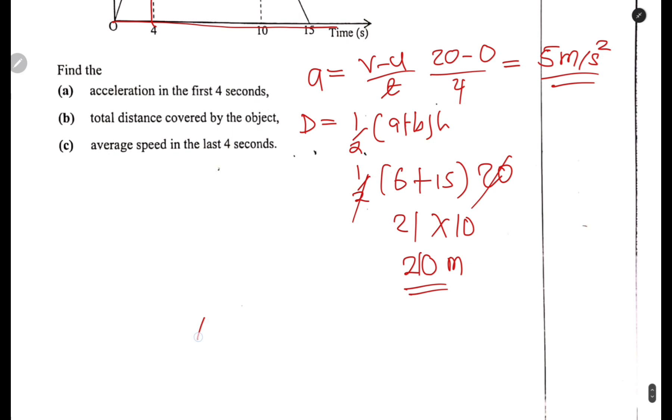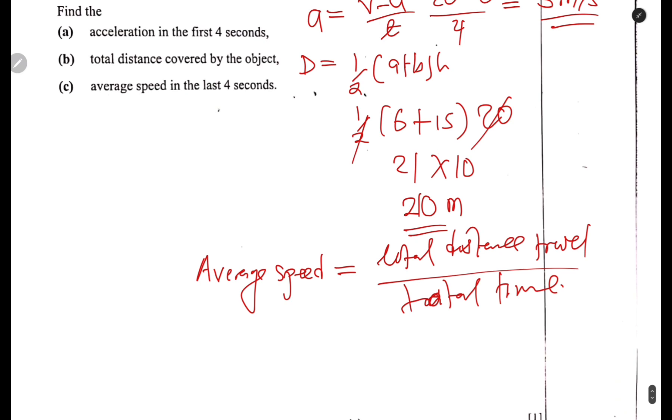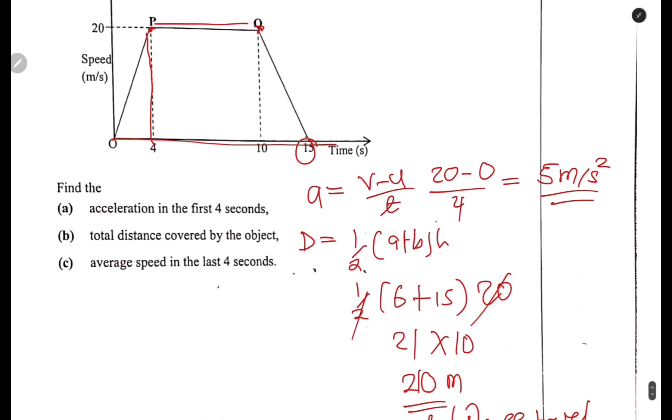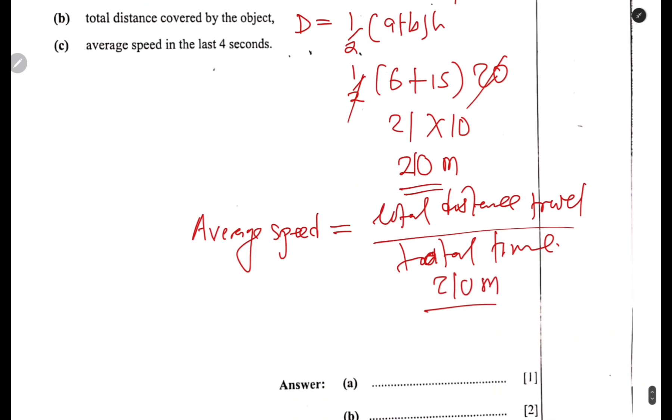Then part (c): average speed. What do you do in order to calculate average speed? Average speed is total distance traveled divided by total time taken. The total distance traveled is 210 meters. The total time traveled, you can look at this graph, which is 15 seconds.